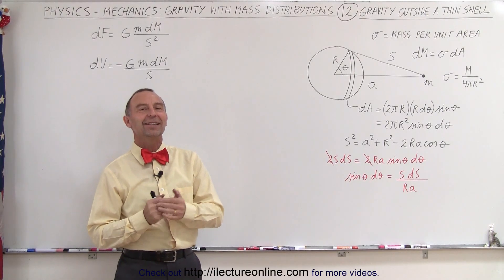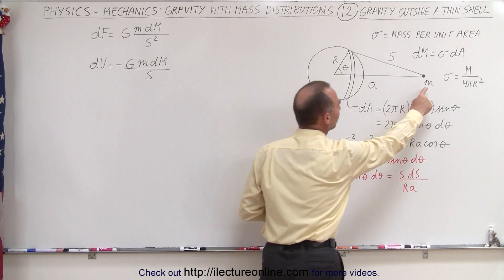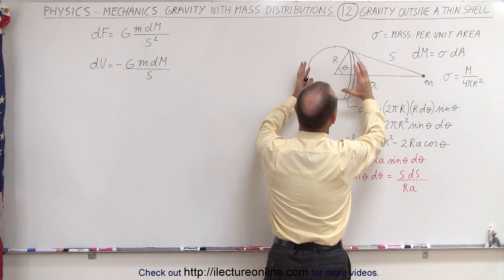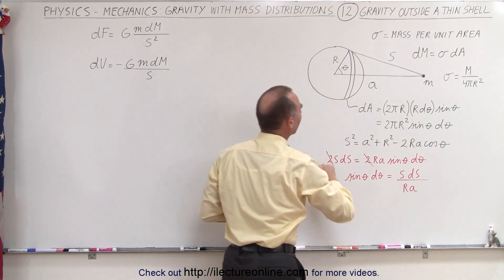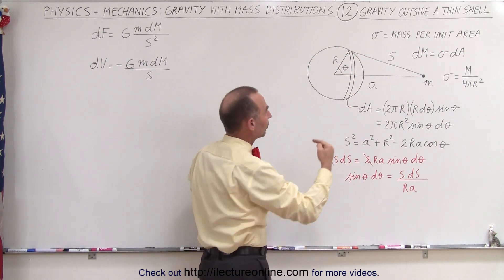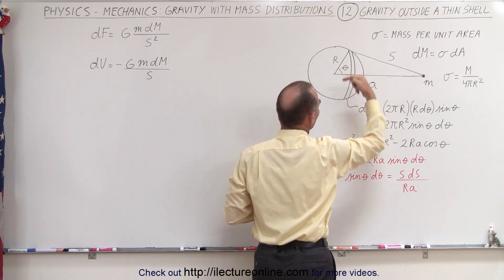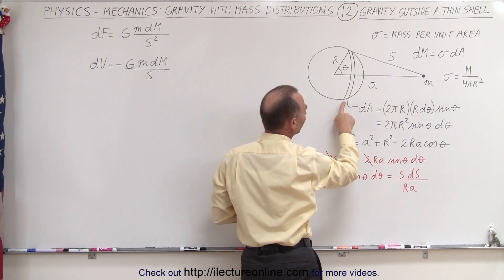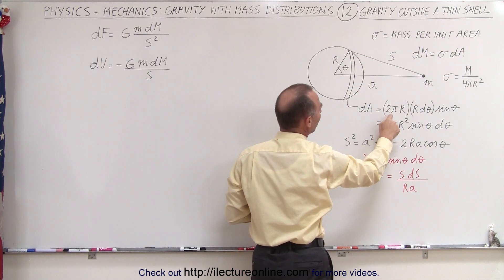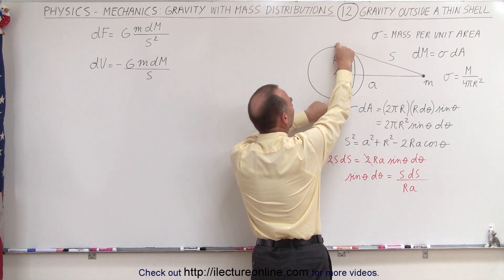Welcome to our lecture online. We're going to calculate the force acting on a small mass in the presence of a spherical shell. This is a hollow shell of radius r. To do that, we start by taking small strips around the shell and first get the area of each strip, which equals the circumference 2πr — though that would only be the circumference at the center.